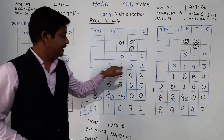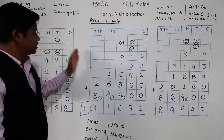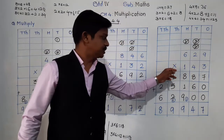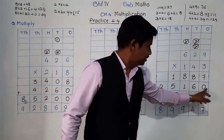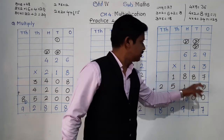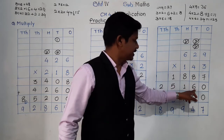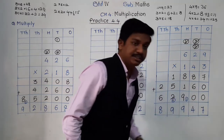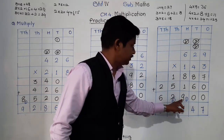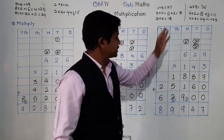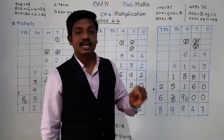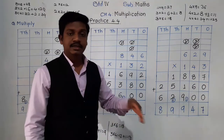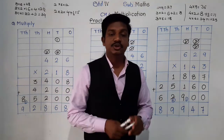In this way we multiply any given number by a three digit number. Once you adopt this procedure and method, you can multiply by any number. If there is a four digit number, the same method applies. When multiplying by the ones place digit, write as it is; by the tens place digit, start from tens and put 0 in ones; by hundreds, put zeros in ones and tens; by thousands, put zeros in ones, tens, and hundreds — same method.